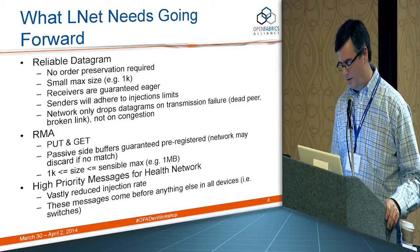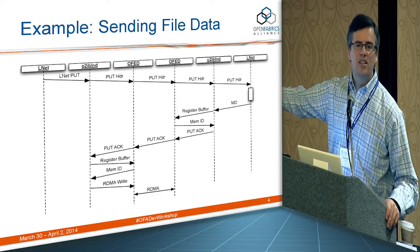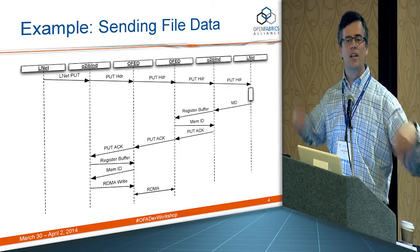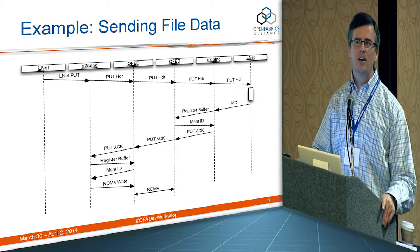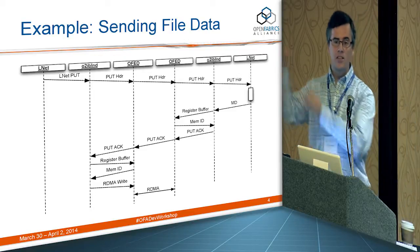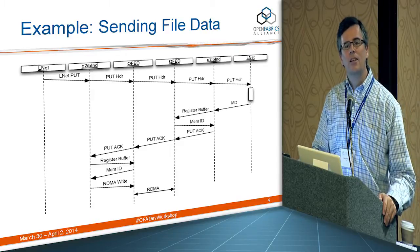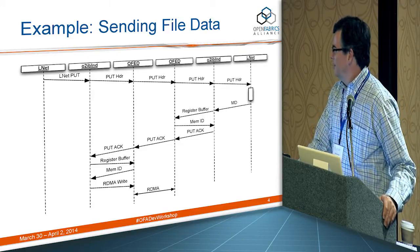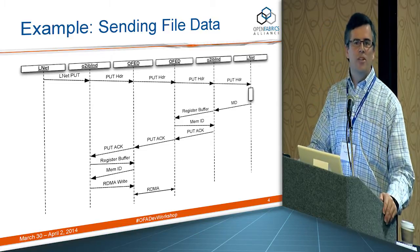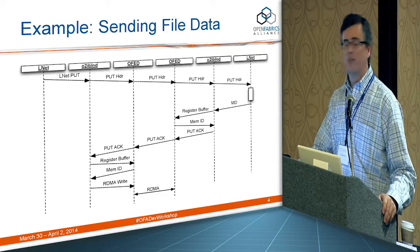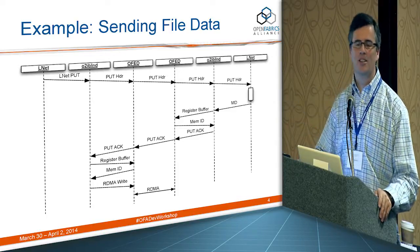Regarding the RDMA write in the earlier diagram — the receiver knows the data has arrived because after the RDMA completes, OFED signals a completion. So it is RDMA write with immediate. We get immediate notification, push the notifications up to LNET, which interacts with the RPC layer to indicate either that a send completed or that data was received. As for the 32-bit immediate data field — we haven't had a problem with it being too small. To be honest, we may not even be using the immediate data value ourselves in most code paths.